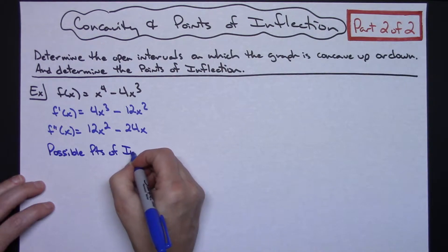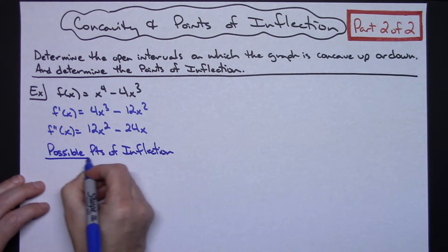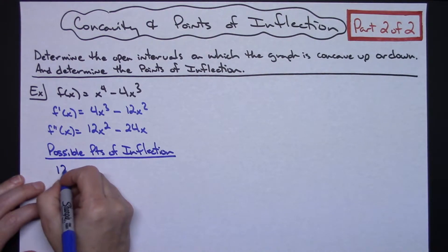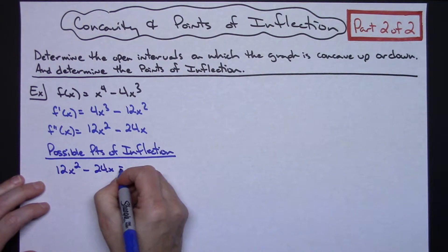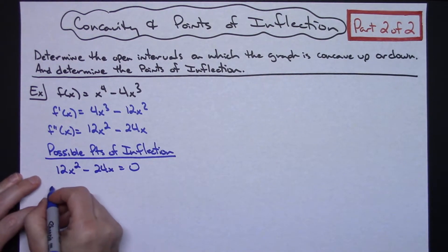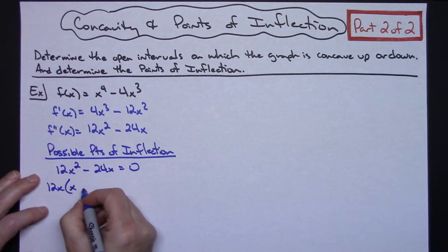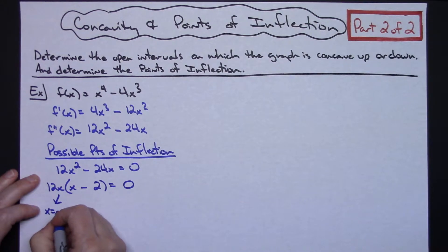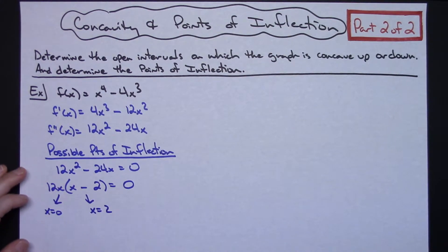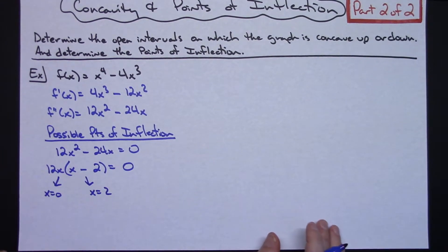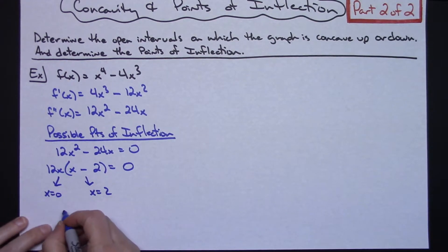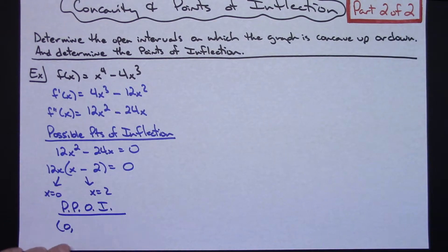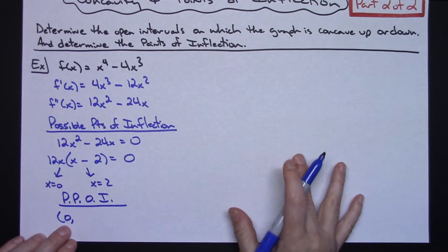I emphasize that to make sure students don't automatically assume they're definite points of inflection. So setting the second derivative equal to zero: 12x² minus 24x equals zero. Factoring out 12x gives us 12x(x minus 2) = 0, so x equals zero and x equals 2. Since points of inflection are points on the curve, we write them as ordered pairs — these are our possible points of inflection.